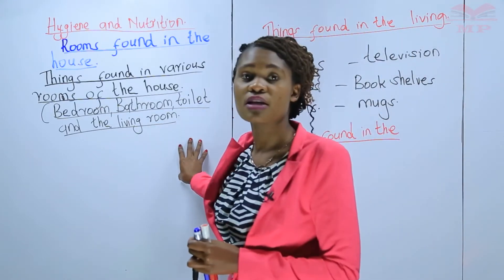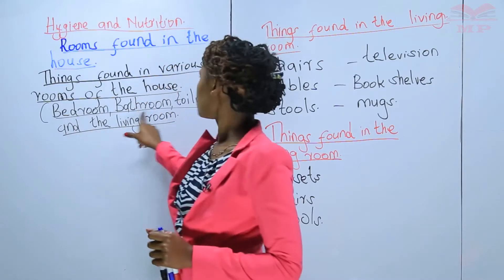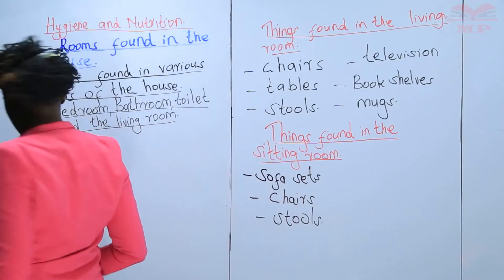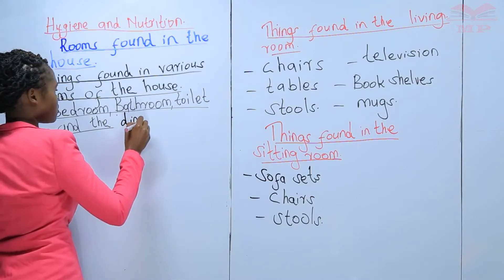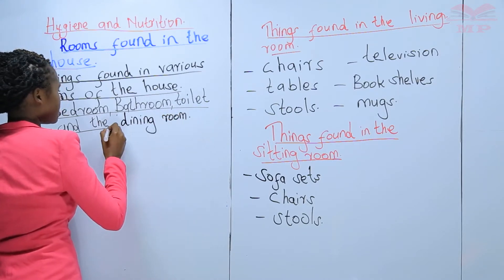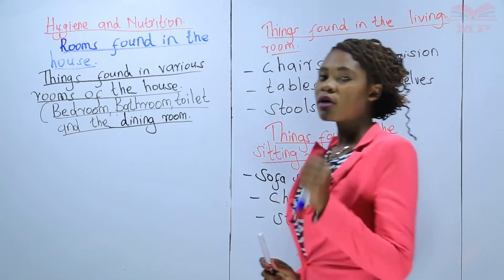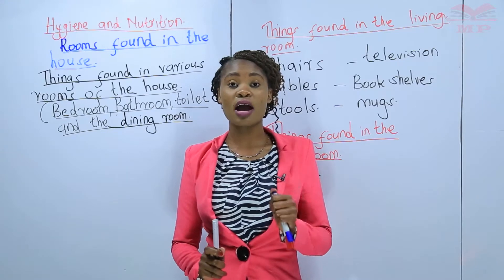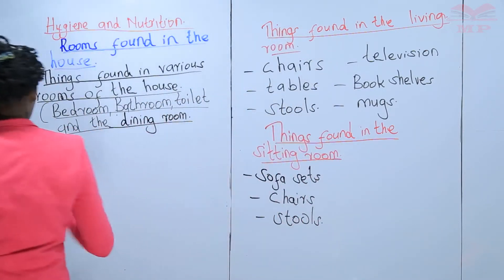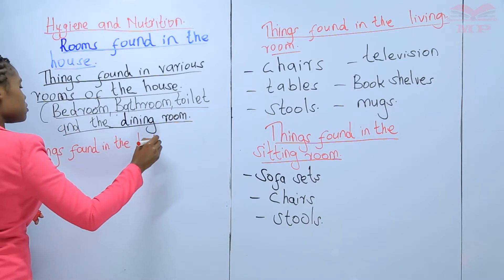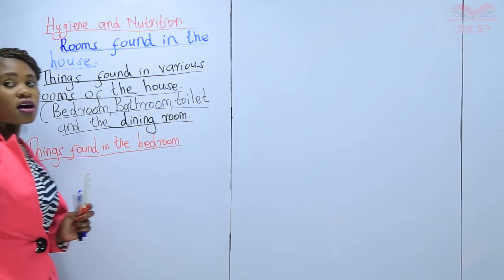For this lesson, we are still going to discuss about the same topic but different rooms. Today we are going to discuss about things found in the bedroom, bathroom, toilet, and the dining room — we had already discussed the living room in the last lesson. So let's start with the first room, which is the bedroom. Let's find out some of the things found in a bedroom.